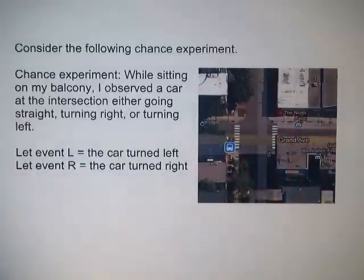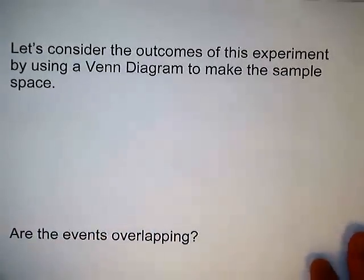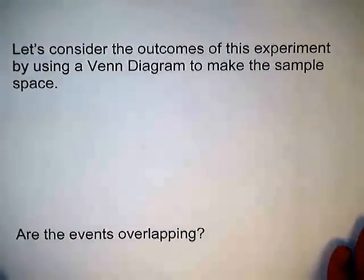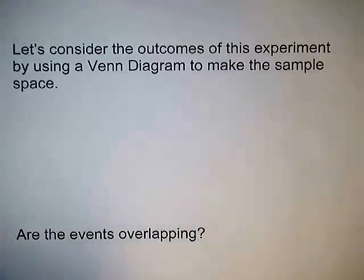I'll let event L be that the car turned left, and let event R be the car turned right. Let's consider the outcomes of this experiment by using a Venn diagram to make the sample space.